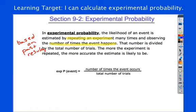Notice the difference in notation. You have the EXP out front to show that it's experimental, but other than that, still the same. Write this down. That's the number of times the event occurs over the total number of trials.